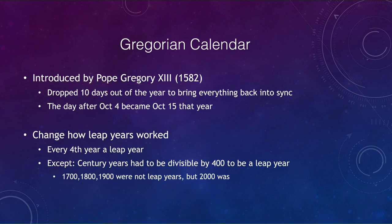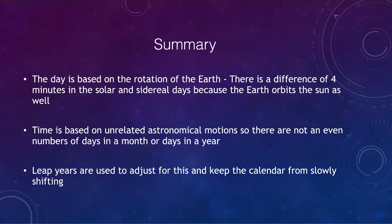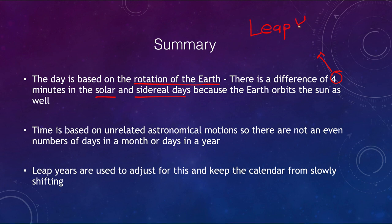In summary: the day is based on the rotation of the earth, and there is a four-minute difference between the solar and sidereal day because the earth is moving around the sun at the same time. Importantly, this four-minute difference has nothing to do with leap years — leap years arise only because of the average number of days in a year, not the difference between solar and sidereal days.